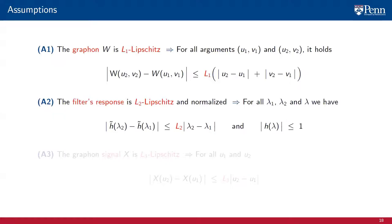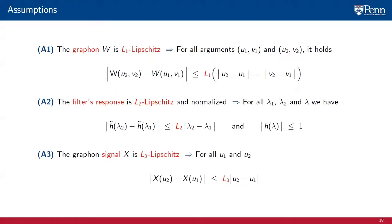We also require the filter's frequency response to be Lipschitz with constant L2. That is, for all eigenvalues λ1 and λ2, we have that the absolute value of the difference of the filter's response evaluated at λ2 and λ1 is bounded by the Lipschitz constant times the distance between the eigenvalues. We also require the filter's frequency response to be normalized in the sense that the absolute value of the frequency response at any λ is at most 1. Our third assumption is that the graphon signal x is Lipschitz with constant L3. That means that for all U1 and U2, the absolute value of the difference of the graphon signal at U1 and U2 is bounded by the Lipschitz constant L3 times the distance between the arguments U1 and U2.